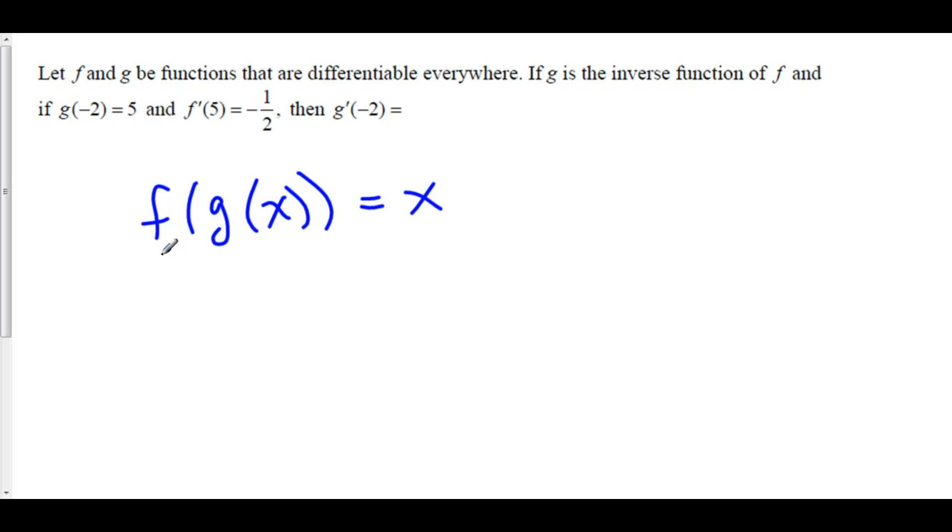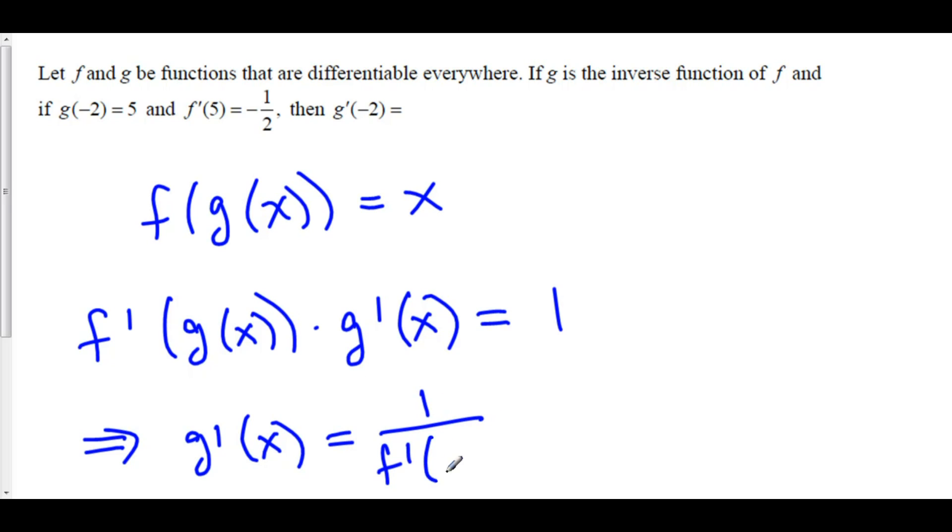The derivative of f of g is f prime of g of x times the derivative of g of x. And this is equal to the derivative of x, which is just 1. Which implies that g prime of x is equal to 1 over f prime of g of x.